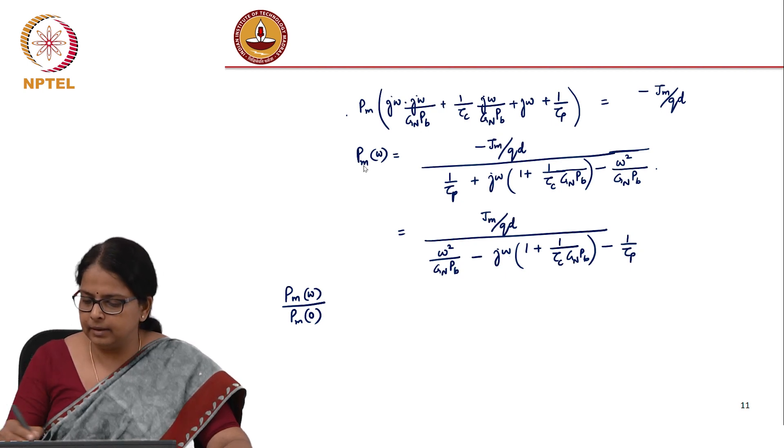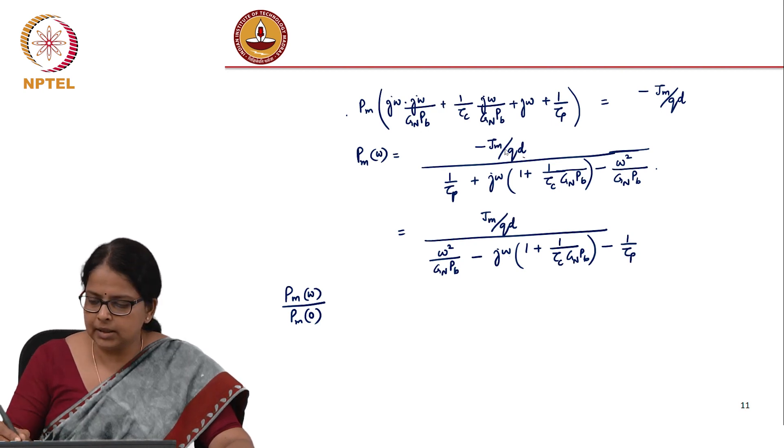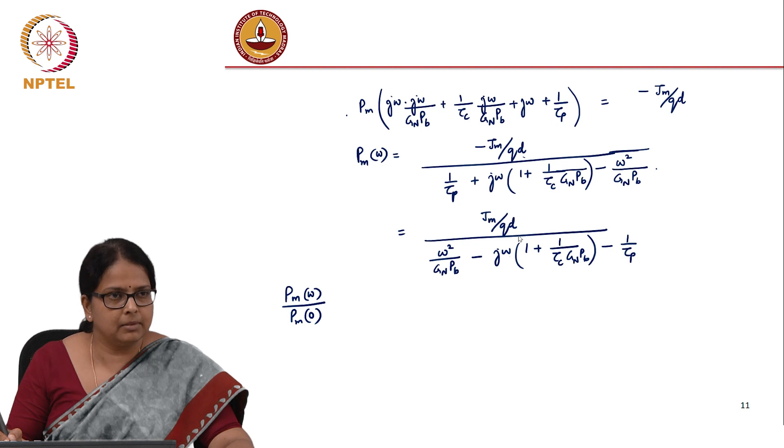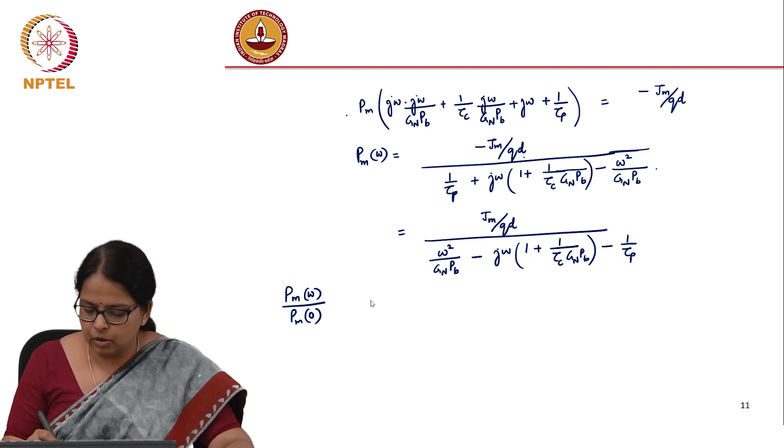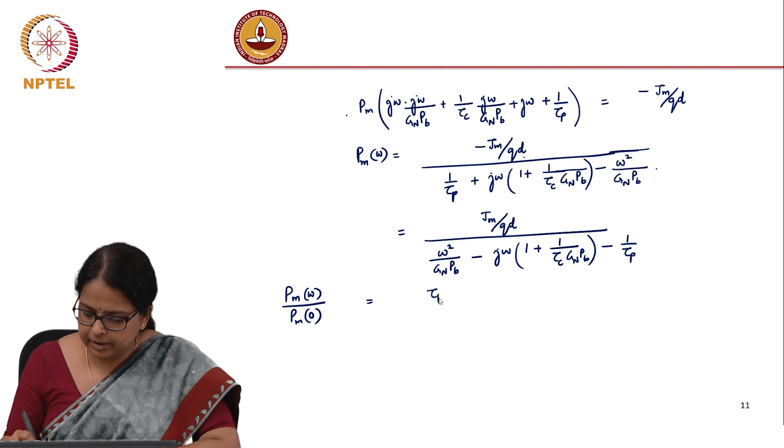What is the ratio of this divided by p_m at zero? This j_m/(qd) will be common, that goes off. What you will have is only tau_p, 1 divided by 1/tau_p, so that will be tau_p.